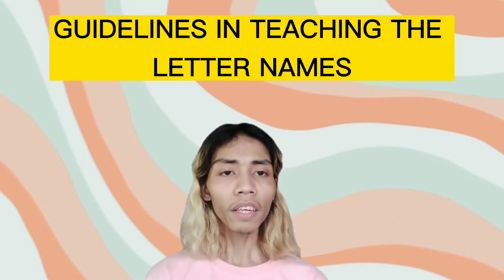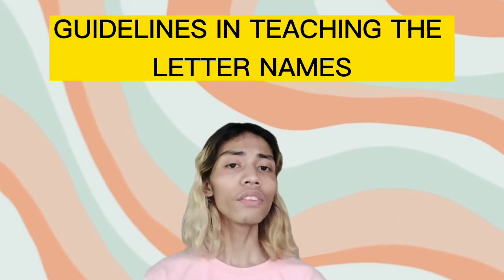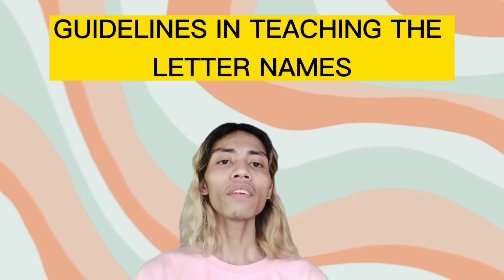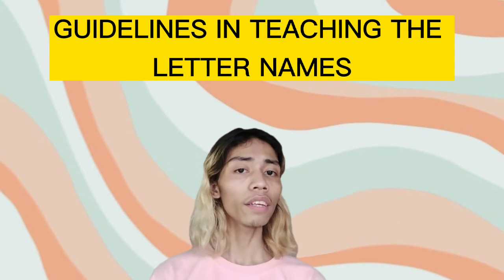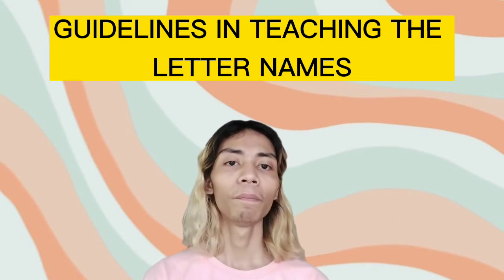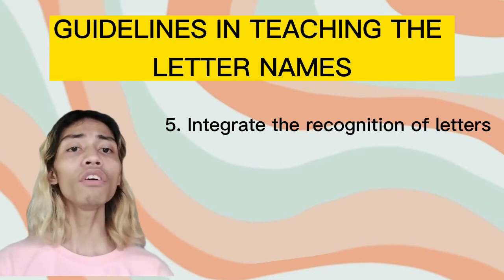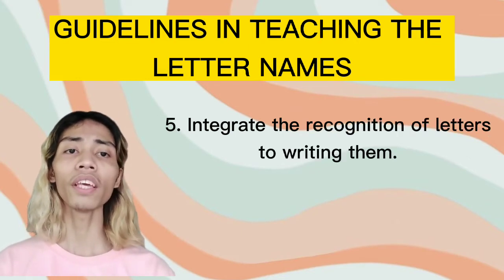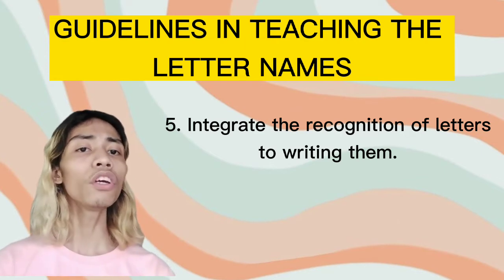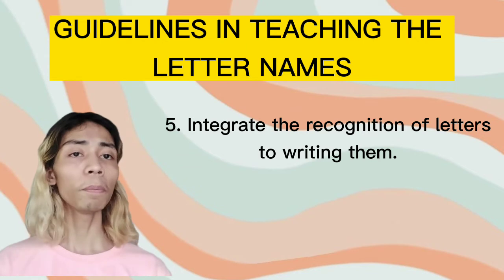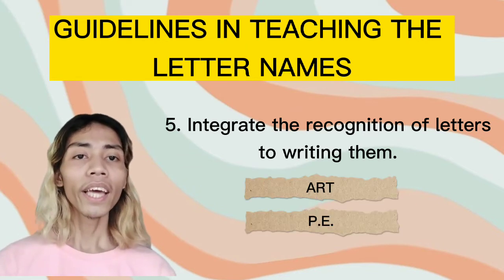Also, the examples given should start with a single letter that does not blend. For example, the word 'Prutas' is not a good example for letter P. Number five: we have to integrate the recognition of letters with writing them. We should integrate letter recognition with other subject disciplines such as Art, PE, and Music.